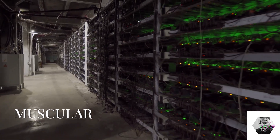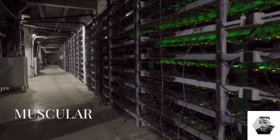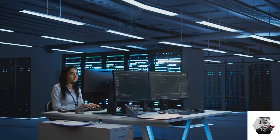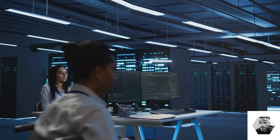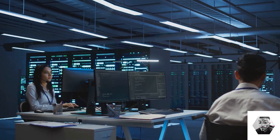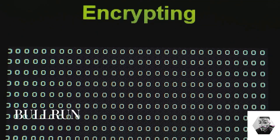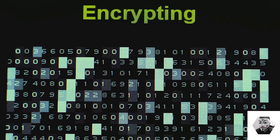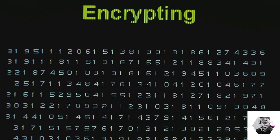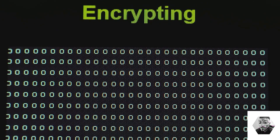MUSCULAR, a collaboration between the NSA and GCHQ, taps into the private networks of major tech companies by directly accessing data flows between their data centers, providing bulk access to user data without consent. BULLRUN focuses on weakening encryption standards and inserting backdoors into widely used cryptographic protocols, allowing the NSA to decrypt secure communications.